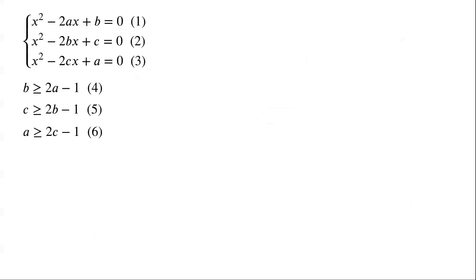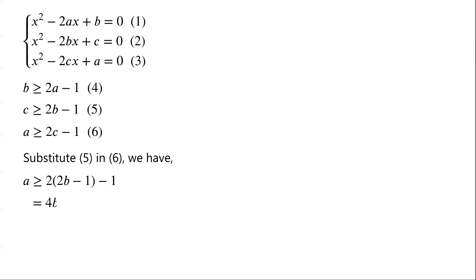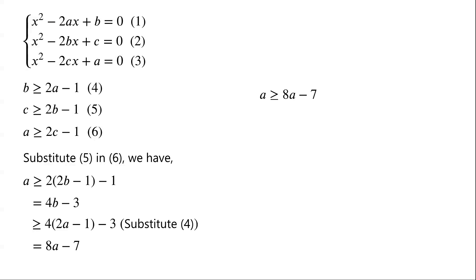Now we have three inequalities in a, b, and c. Substituting inequality 5 and inequality 6, we have a is greater than or equal to 2 times (2b minus 1) minus 1, which equals 4b minus 3. From inequality 4, b is greater than or equal to 2a minus 1, so a is greater than or equal to 4 times (2a minus 1) minus 3, which equals 8a minus 7. So a is greater than or equal to 8a minus 7, meaning 7a is less than or equal to 7, and thus a is less than or equal to 1.